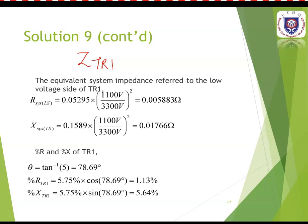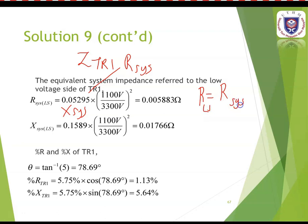After identifying the load current and system values, go to the cable for 400 kcmil analysis. Insert the resistance and reactance values from the table to complete the calculation for the total impedance at fault F1.